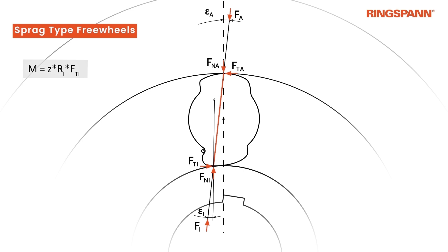The transmitted torque is calculated as the product of the number of Spragues, the radius of the track, the normal force and the clamping angle. The clamping angles and forces automatically adapt to the applied torque.